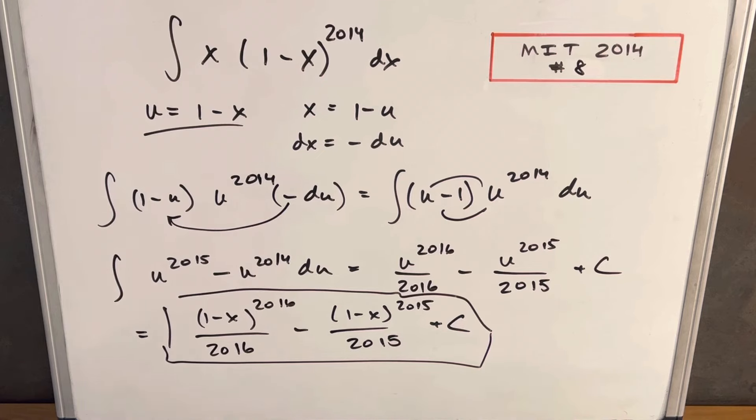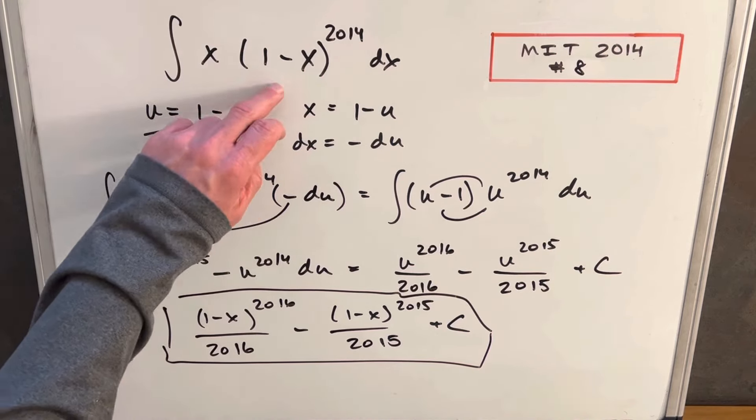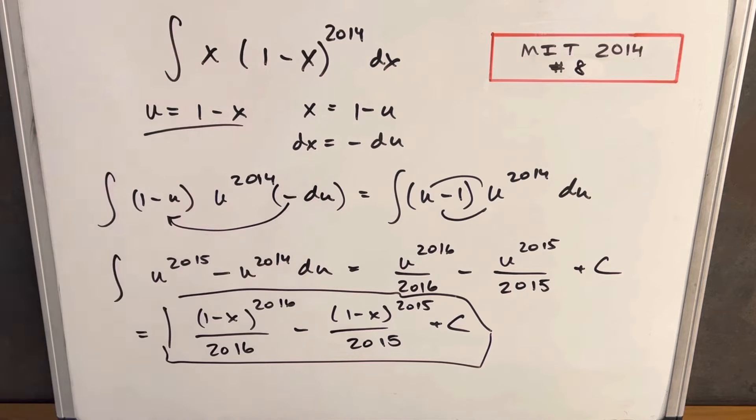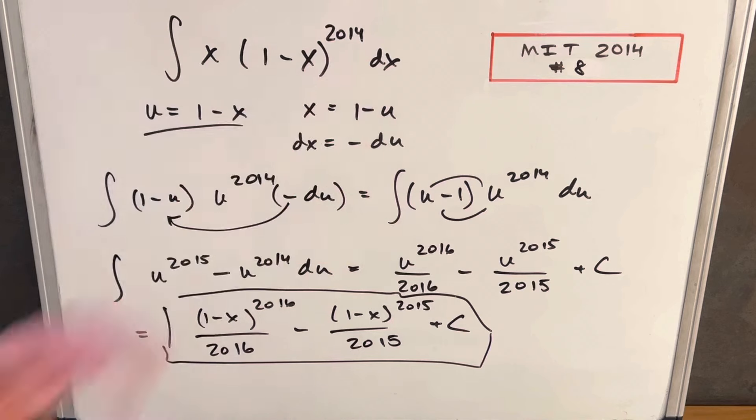Okay, so pretty easy problem there today. I think one takeaway is if you have a more complicated term, you can simplify that with u-substitution. Even if it makes the other term more complicated, we kind of shifted the problem away from the 2014. That worked out nice. Okay, that was MIT 2014 problem 8. Thank you for watching. Please like and subscribe. Have a good day.